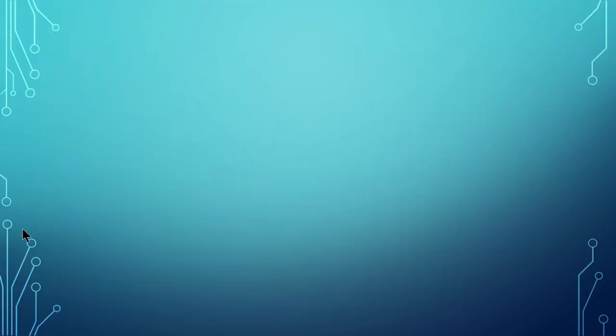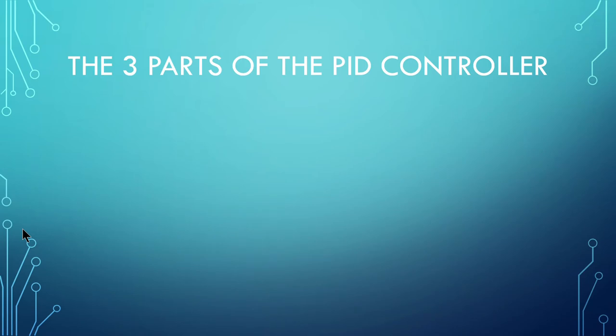A PID controller has three parts as shown on the screen. P for proportional, I for integrative, and D for derivative. This video will teach you about the PID controller and how you can implement it in code.